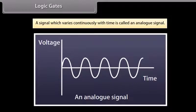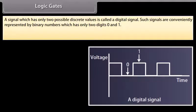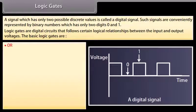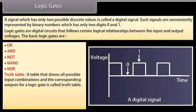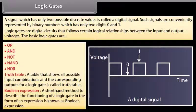Logic gates: A signal which varies continuously with time is called an analog signal. A signal which has only two possible discrete values is called a digital signal, conveniently represented by binary numbers with digits 0 and 1. Logic gates are digital circuits that follow certain logical relationships between input and output voltages. The basic logic gates are OR, AND, NOT, NAND, and NOR. A truth table shows all possible input combinations and corresponding outputs. A Boolean expression is a shorthand method to describe the functioning of a logic gate.